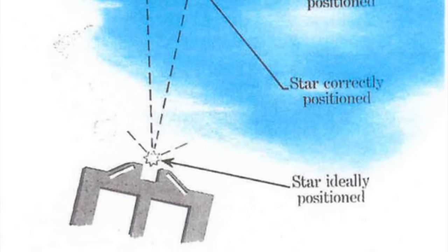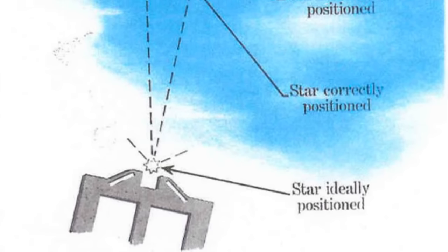Ideally when sighting an object, the object will appear perfectly aligned within the front notch on the sight, but this doesn't always happen.